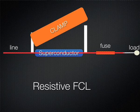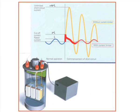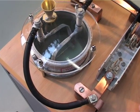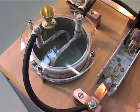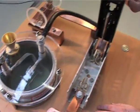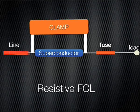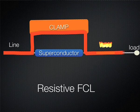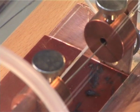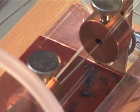Now if I switch it on and push the trigger, you can see that the YBCO bar became normal conducting, and that way the nitrogen started boiling. But if I close this switch here, the fault current limiter won't be in the circuit anymore — only the small fuse — and you can actually see the big difference.